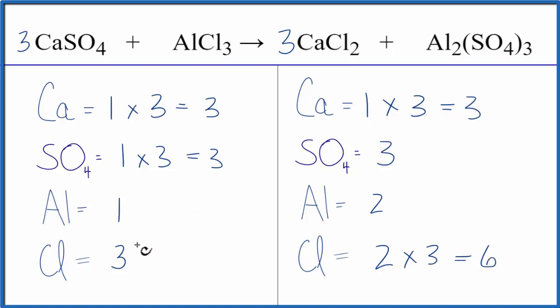If we put a two in front of the aluminum chloride, the three here, three times two, that gives us the six. So those are balanced, and one aluminum times two. That gives us two, and those are balanced, and we're done. This equation is balanced.